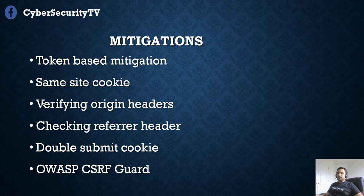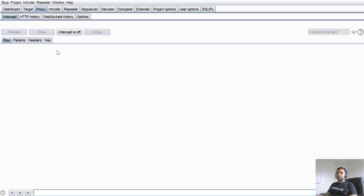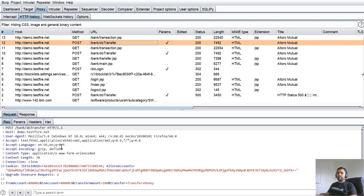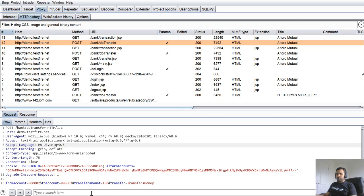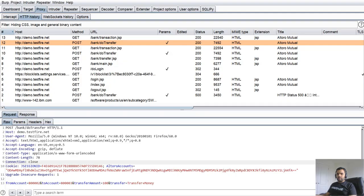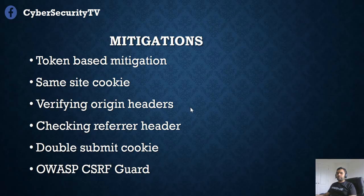Another mitigation is verifying the Origin header. You can verify where the request was actually originated — if it's not originated from the same domain the website is hosted on, you can decline the request. If the Origin header is not present, you can check the Referrer header. If the Referrer is not from the same domain, you can reject the request.